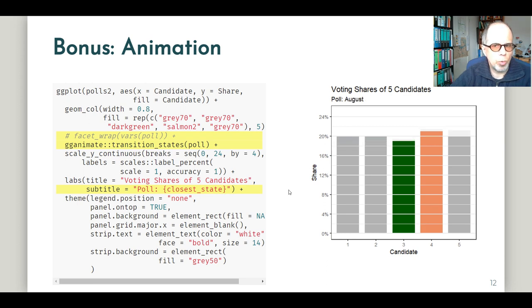The only other change we made in the code is the subtitle. And we can use an internal variable that is provided by the gganimate package and the transition_states function that helps us display the state or in this case the poll that the animation is currently showing. So the internal variable is called closest_state and we have this curly braces notation that was made popular by the glue package so that we don't have to use the paste function and open and close quotation marks, but we can use this notation inside the quotation marks and this text is replaced by the value of the variable.